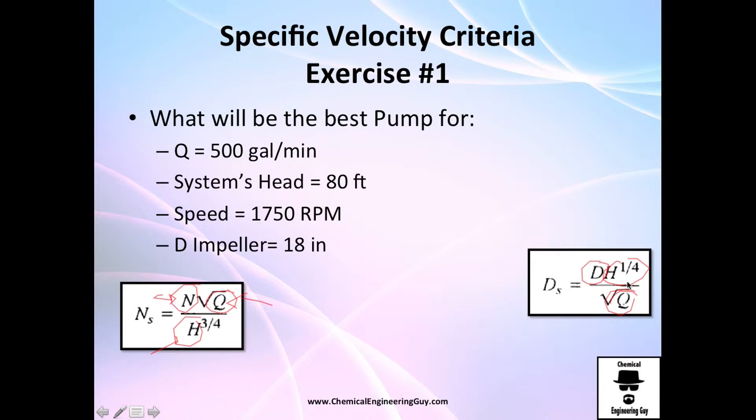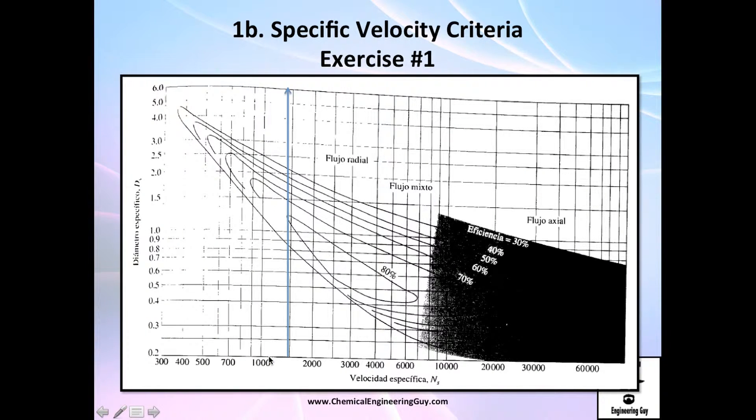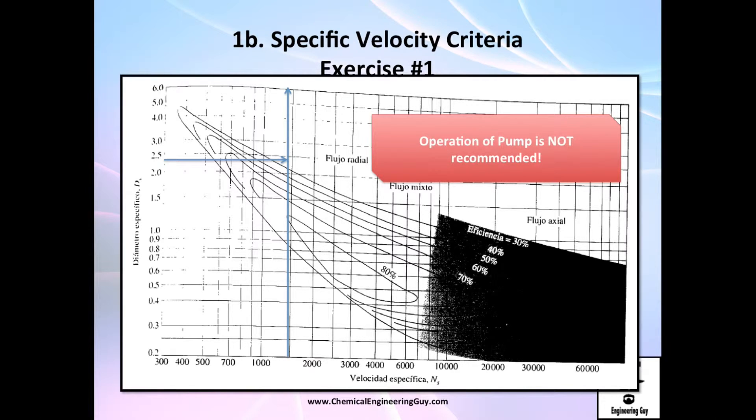So doing this, I got these revolutions per minute, this head and this volumetric flow rate. I got this specific velocity. The same for diameter. Let's go back to the graph. This is my specific velocity and this is my specific diameter. As you can see, the point is out of the normal operation. If this line is 30%, I could say this is between 20% and even 10%. So this is pretty bad operation. This is not recommended to operate.